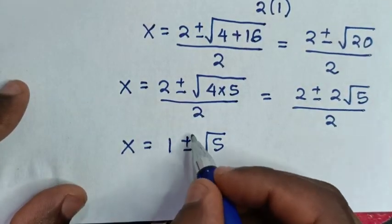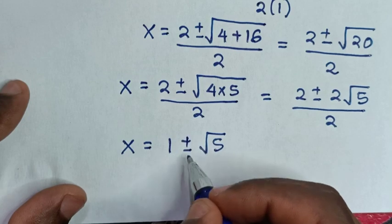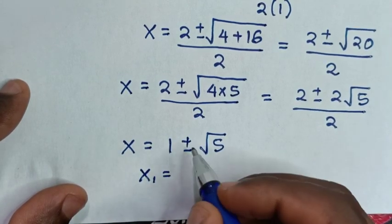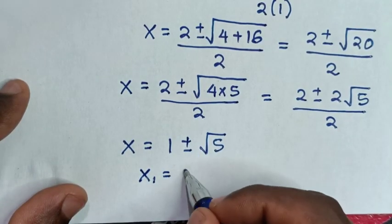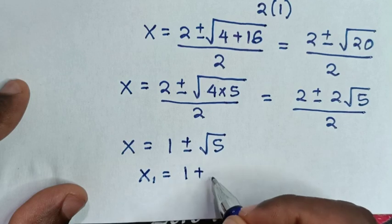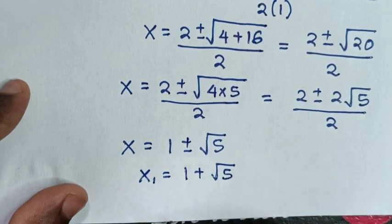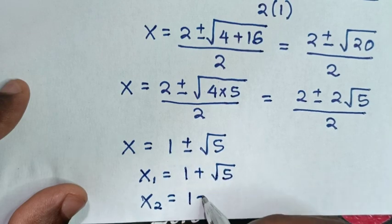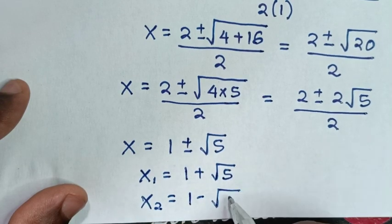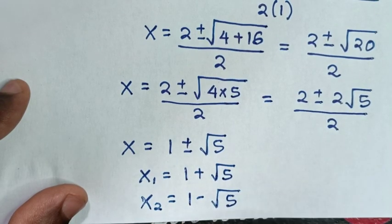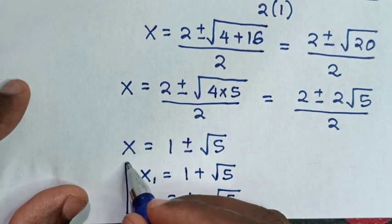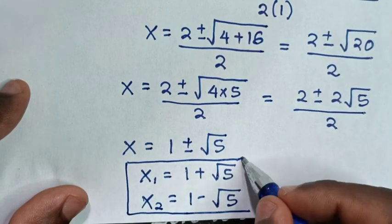Therefore for the value of x we have two answers. The first value of x is equal to 1 plus square root of 5, and the second value of x is equal to 1 minus square root of 5. So these are all the values of x in this problem.